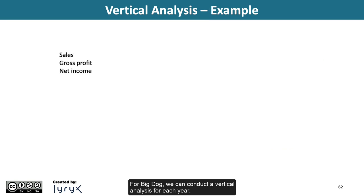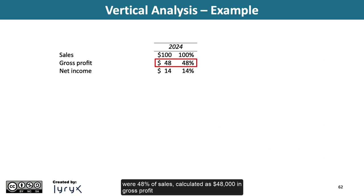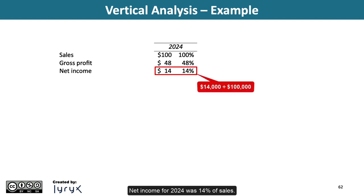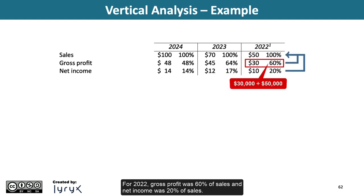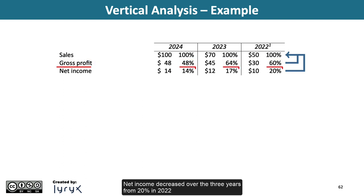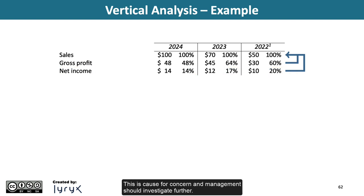For Big Dog, we can conduct a vertical analysis for each year. Starting with 2024, gross profits of $48,000 were 48% of sales, calculated as $48,000 in gross profit divided by $100,000 in sales. Net income for 2024 was 14% of sales. For 2023, gross profit was 64% of sales, and net income was 17% of sales. For 2022, gross profit was 60% of sales. We can see that the gross profit percentage increased from 2022 to 2023 and then dropped significantly in 2024. Net income decreased over the three years from 20% in 2022 to 17% in 2023, and again to 14% in 2024. This is cause for concern and management should investigate further.